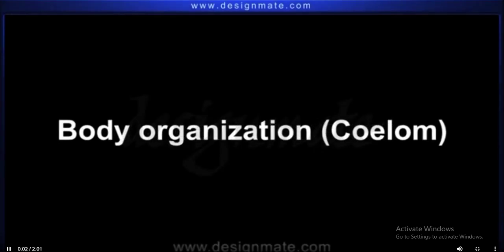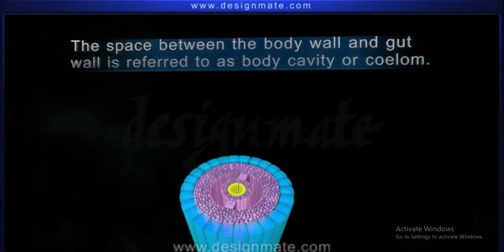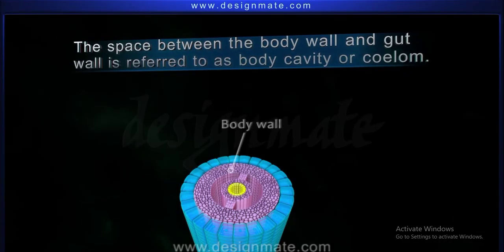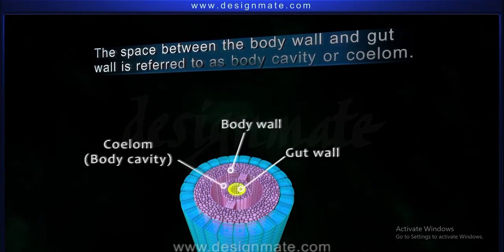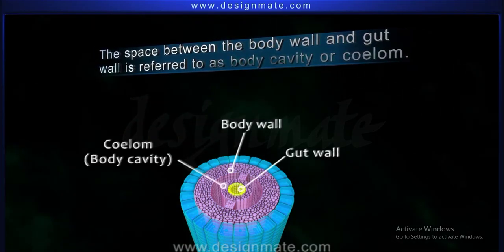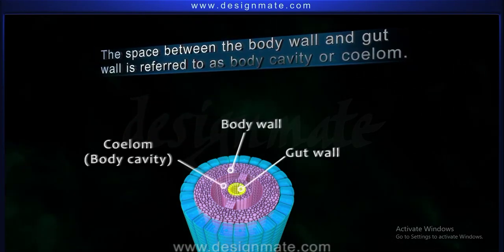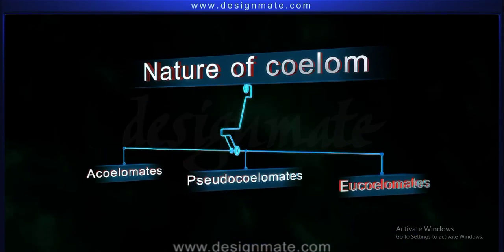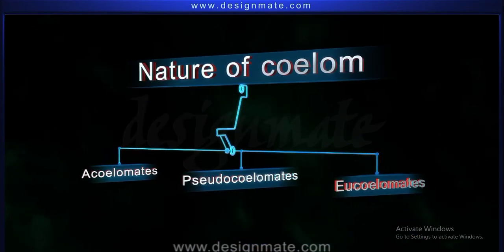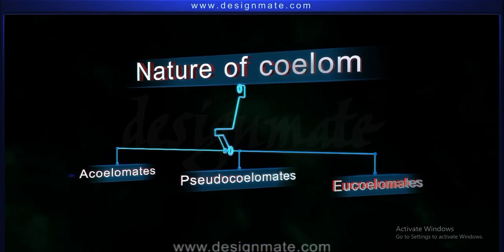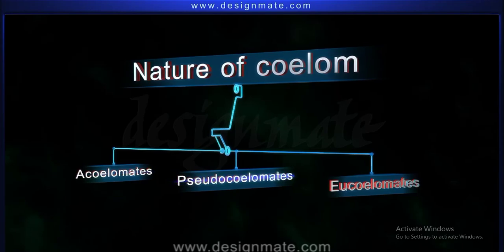Body Organization. The space between the body wall and gut wall is referred to as body cavity or coelom. On the basis of the nature of coelom, animals can be categorized as Acoelomates, Pseudocoelomates, and Eucoelomates.